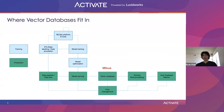Then, when you get your input data in production — for example, a search query from a user — you can run it through the same model, then use your vector database to efficiently perform an approximate nearest neighbor search and get your results. Just do some post-processing, and then you're done.